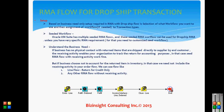The third step is to understand the business need. If the business has no physical contact with the return item — items shipped directly to the supplier by the end customer — and you have a receiving activity in the workflow, that receiving activity will enable your organization to track the return for accounting purposes. In that case, the seeded RMA flow with the receiving activity works fine. But if the business chooses not to account for the return item in inventory, then we do not need to include the receiving activity in the order flow.